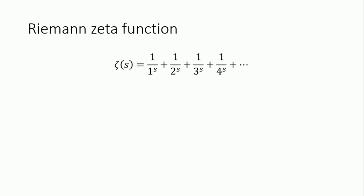The Riemann zeta function is 1 over 1 to the s, plus 1 over 2 to the s, plus 1 over 3 to the s, and so on. This function is a type of infinite series. Does that mean it approaches infinity? Not necessarily — it means we're adding an infinite number of terms. Since the domain requires s to be greater than 1, we only get a finite result in that region; otherwise the result is infinity.